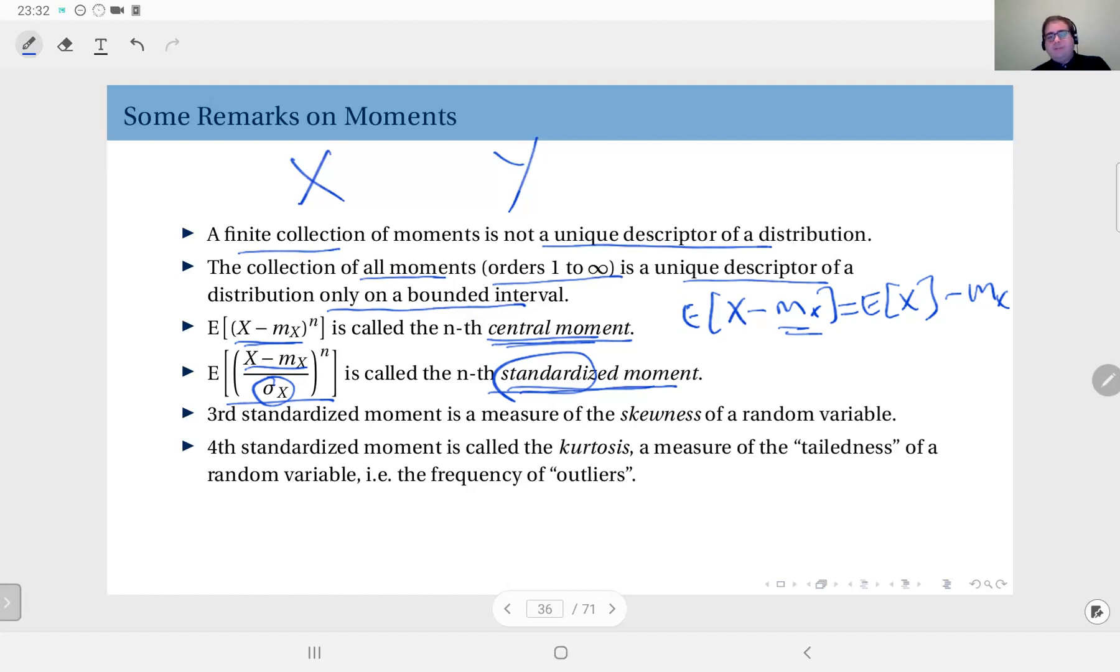Now we talked about the first and second moments, or first and second order statistics. First order statistics, we have the mean and the mean absolute deviation. Those are first order statistics because you have X to the power one in their definition. And the variance is a second order statistic along with the second moment, of course, because in their definition, you have X to the power two.